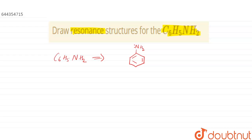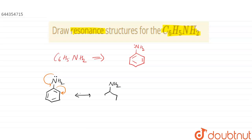To draw the resonance structure, we start with NH2 and C6H5, which is the benzene ring. The lone pair on nitrogen shifts into the ring, forming a new bond, giving a structure where NH2 has a double bond with the ring.